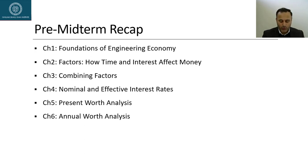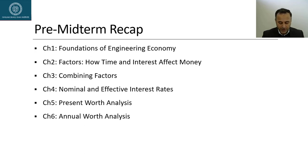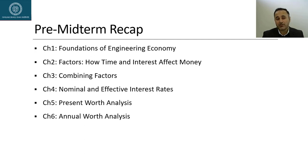In chapter number 2, we talked about time value of money. I explained what the time value of money actually is, and we talked about the importance of interest. I told you that interest is the manifestation of time value of money. Afterwards, we covered some factors for single amounts, then how to tackle uniform series, and at the end of the chapter, we covered gradients — both arithmetic gradients and geometric gradients.